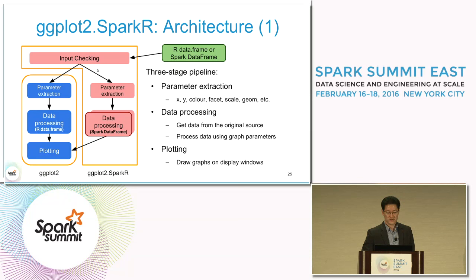The input-checking stage determines whether the input is an R data frame or a Spark data frame, and a three-stage pipeline is used to draw the graphs.